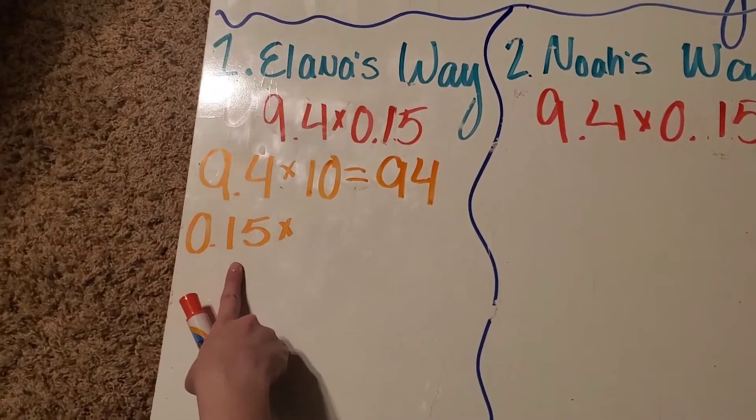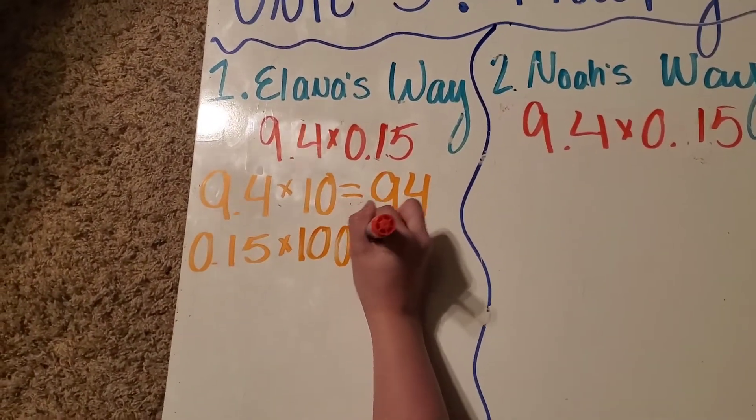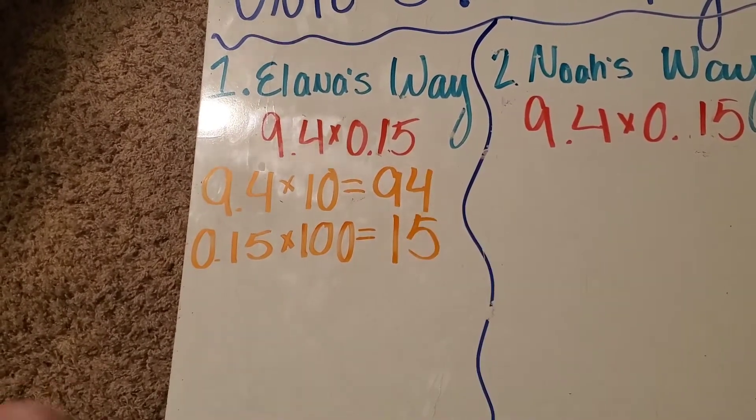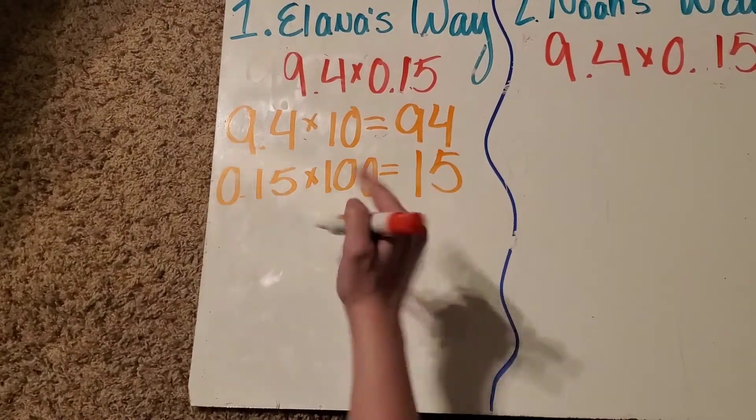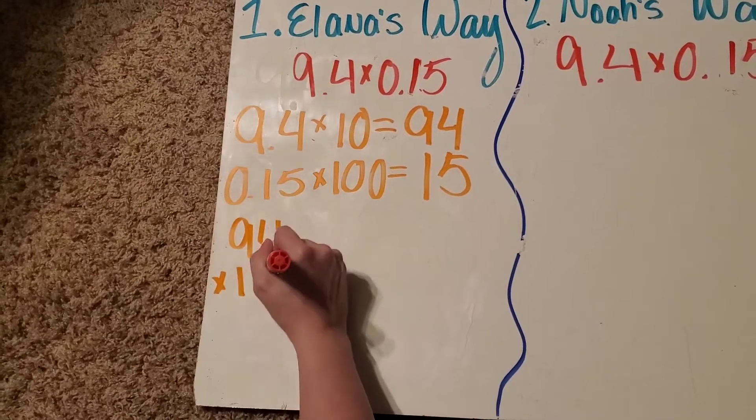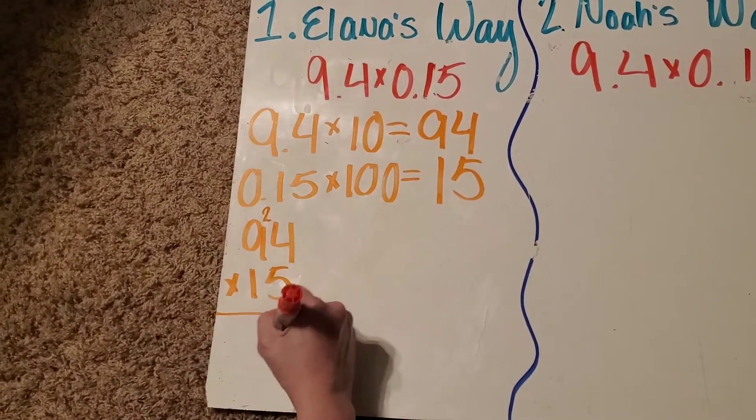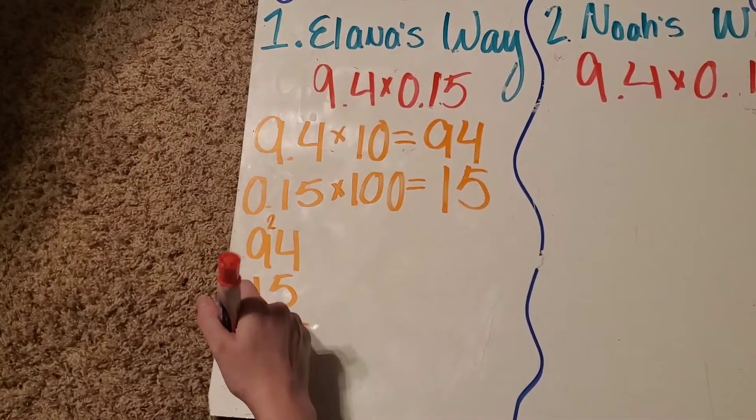This is 15 hundredths. So since it's a hundredth, we need to multiply it by 100, and we'd get 15. Now, we're going to multiply 94 by 15. 5 times 4 is 20. 5 times 9 is 45, plus 2 is 47.